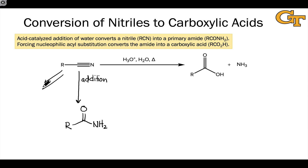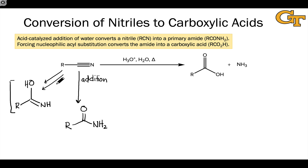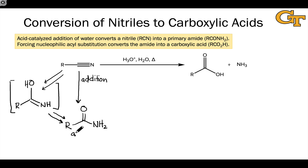This first addition process involves the intermediate formation of first a protonated nitrile, and then after the addition of water, an intermediate that has a C-N double bond instead of a C-O double bond — which is isomeric with the primary amide. An isomerization process, specifically a tautomerization (which we'll investigate in more detail in a future video series), then occurs to give the amide intermediate.